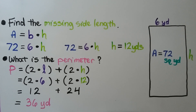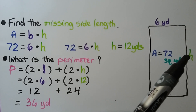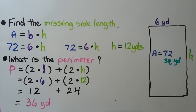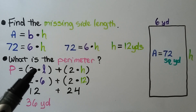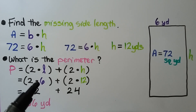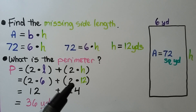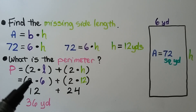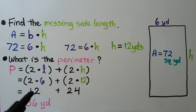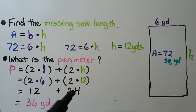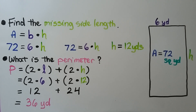What is the perimeter of this rectangle? Now that we know h is 12, we can find the perimeter. Perimeter equals 2 times the length plus 2 times the height — that's 2 times 6 plus 2 times 12. 2 times 6 is 12, and 2 times 12 is 24. So 12 plus 24 gives us a perimeter of 36 yards.